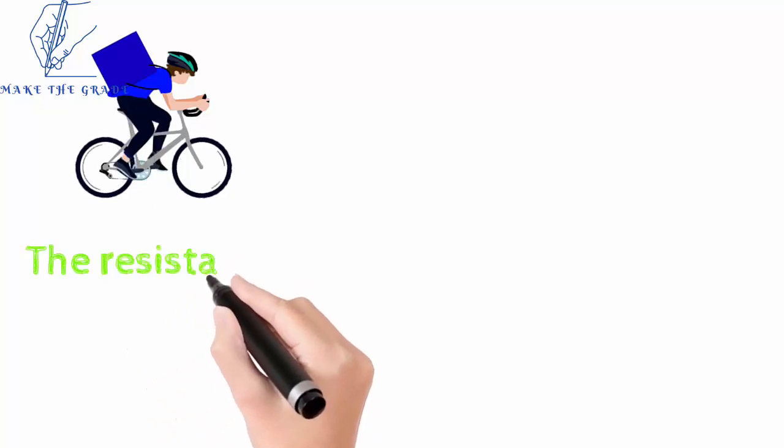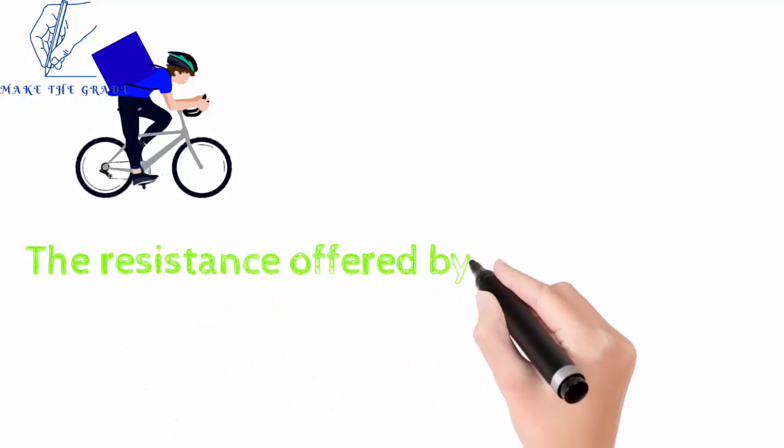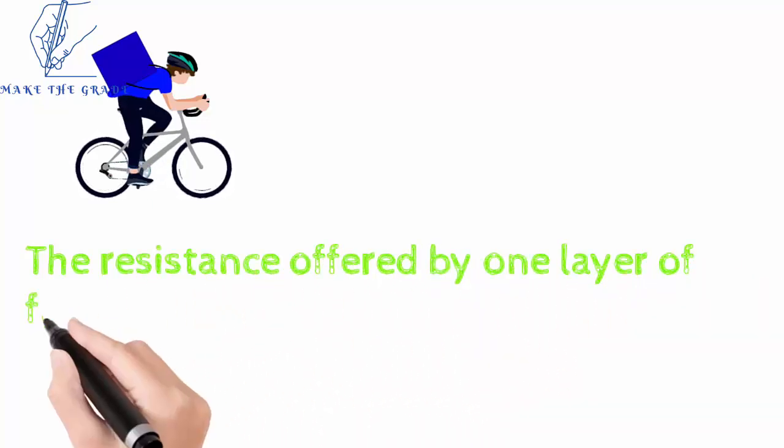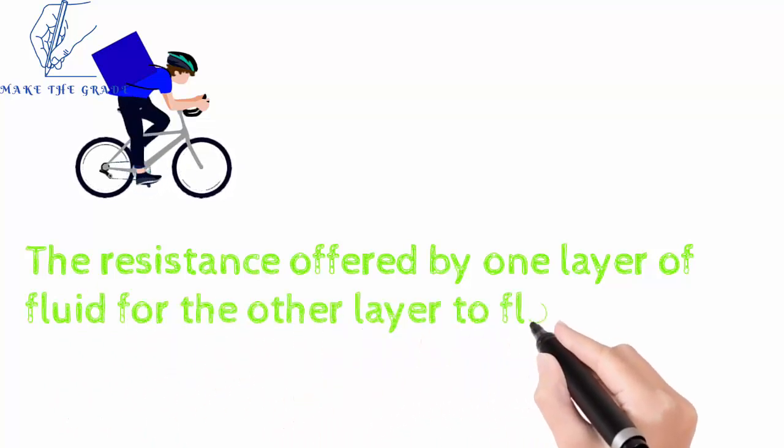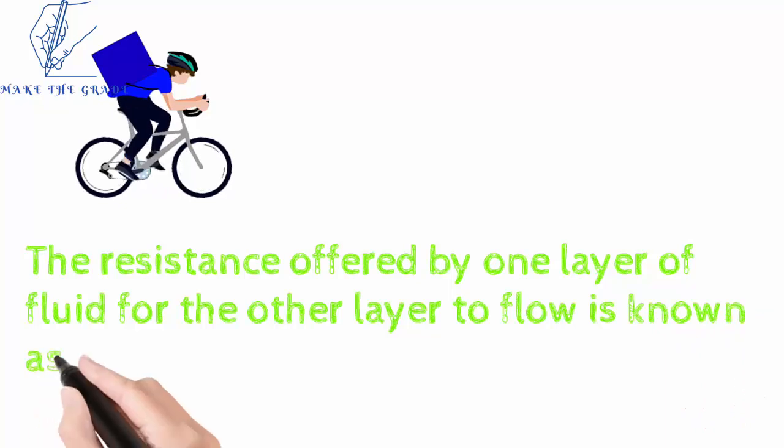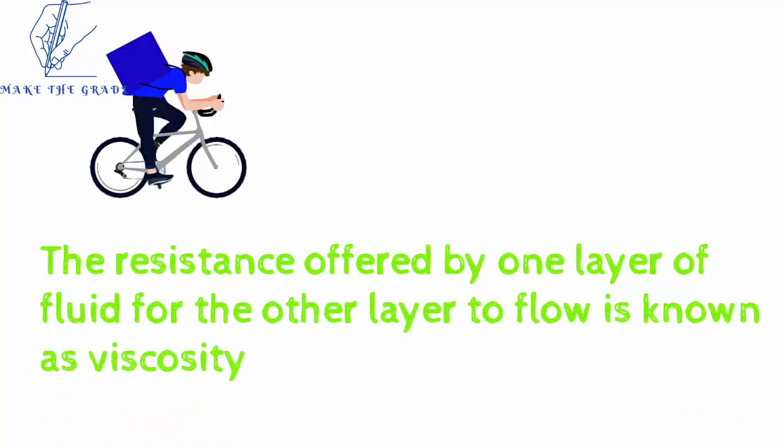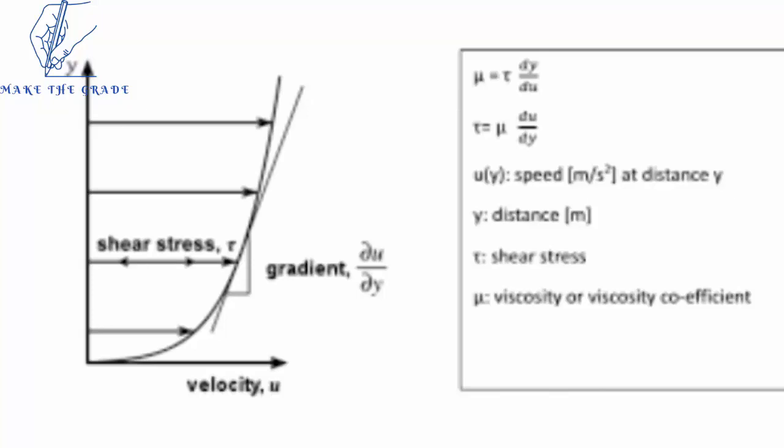This layer of fluid over which the other layer flows offers a resistance. It resists the flow of that layer. This resistance is known as viscosity.